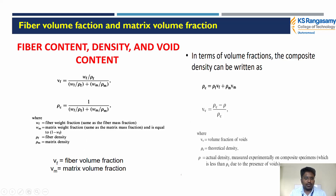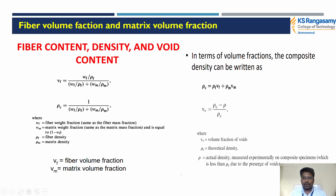Vf is the fiber volume fraction, Vm is the matrix volume fraction. V is the volume fraction of the void, and ρc is the theoretical density. We calculate the density of the volume. This gives the volume fraction of the composite density — this is the final expression.